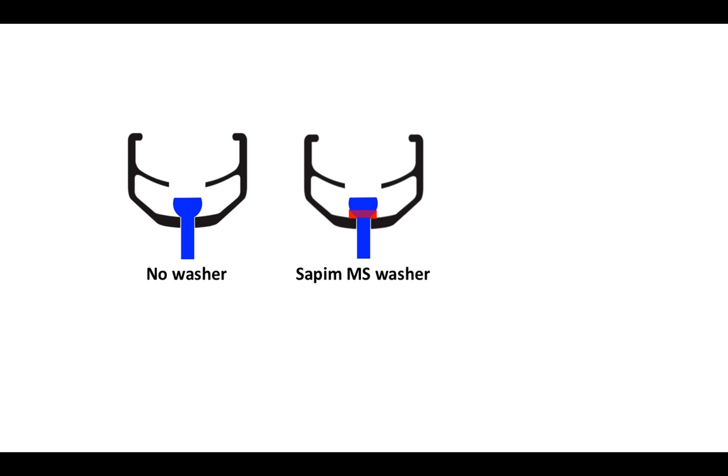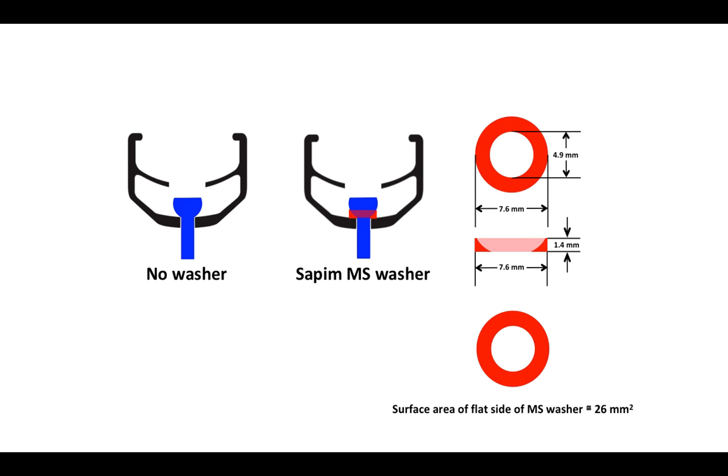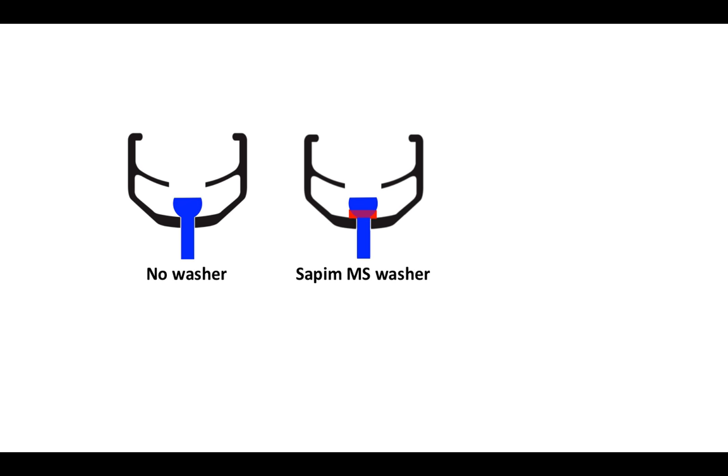As a wheel builder, I am pretty enthusiastic about this new washer and I am willing to make some predictions. These dimensions enable me to calculate the surface area of the flat side of the washer under the nipple that is flat against the rim, and that is a surface area of about 26 square millimeters. Now there is no easy way to calculate the surface area of contact between the nipple and the spoke bed in the diagram on the left, but it is pretty obviously significantly less than the case on the right with the washer. In the picture on the left, the stress concentration points are concentrated right here, whereas on the picture on the right, the stress concentration points are spread out over a larger area, and that should reduce the strain on that part of the rim and reduce the likelihood of premature cracking.